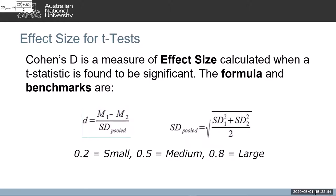Effect size is also an important consideration. If your data has met the underlying assumptions of your tests and you get a significant result, that doesn't necessarily mean the result is an important or substantial one. For a t-test, we calculate something called Cohen's D as a measure of effect size. The benchmarks give you some idea of what a small, medium, and large effect would be, and we will look at the underlying assumptions as well as the effect size for a t-test very shortly.